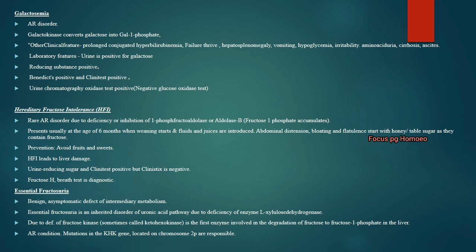Galactosemia is an autosomal recessive disease. Galactokinase converts galactose to galactose-1-phosphate. The patient presents with increased conjugated hyperbilirubinemia, failure to thrive, hepatosplenomegaly, vomiting, hypoglycemia, irritability, aminoaciduria, cirrhosis and cataracts. Urine is positive for galactose. The Benedict's test, Clinitest and urine chromatography oxidase test will be positive.